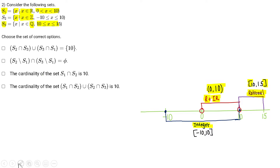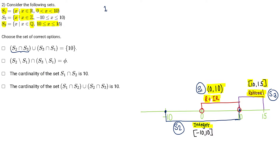So what are we talking about in option A? I need to find S2 union S3. Red is my S1, blue is my S2, and purple is my S3. I need to get the intersection of S2 and S3. From the diagram, S2 and S3 have only one value in common, and that is 10.